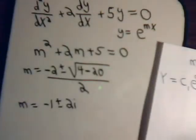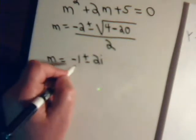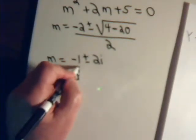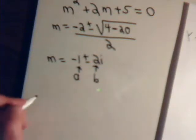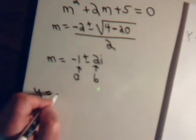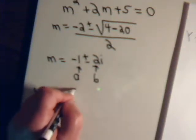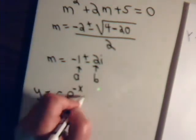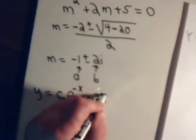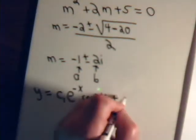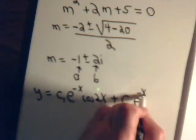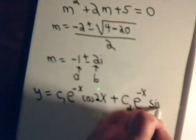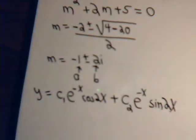So here, this is a, and this is b, so y equals some constant e to the minus x times cosine of 2x, plus another constant e to the minus x times sine of 2x. And that right there should be the end of the problem.